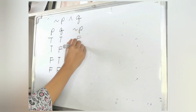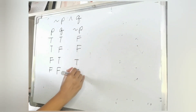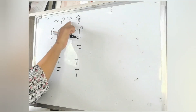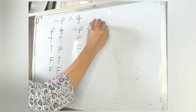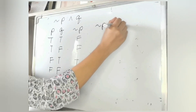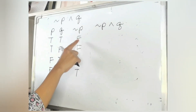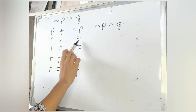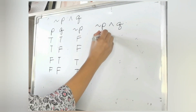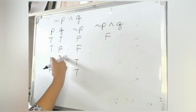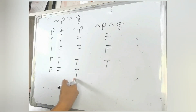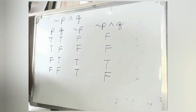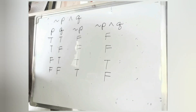So not P gives us: F, F, T, and T. Next, let's evaluate the conjunction of not P and Q, and create a column for that. We apply the conjunction rules to each row to complete the truth table. This is an easy way of constructing the truth table for a given compound proposition.